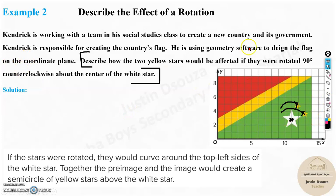Describe what happens to these two yellow stars when it's rotated 90 degrees along the center of this white star. So you need to write it out. See, now if you rotate counterclockwise it's not clockwise, it's not going to the right, it's going to the left. 90 degrees would mean something over here. So you need to tilt it by 90 degrees. So that'll be somewhere over here, this will be coming down, this will be over here, something like that. If the stars were rotated they would curve along the top left sides of the white star and together the pre-image and the image would create a semicircle of yellow stars above the white star. This is what would happen.